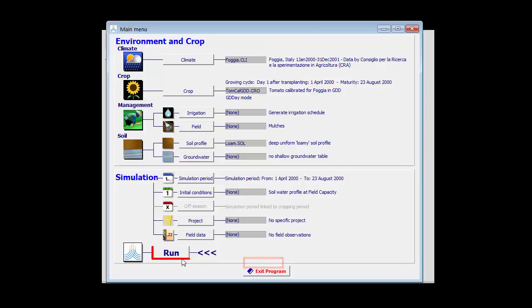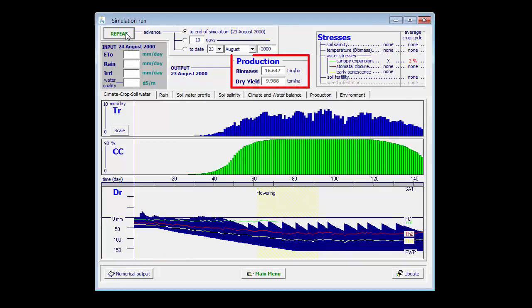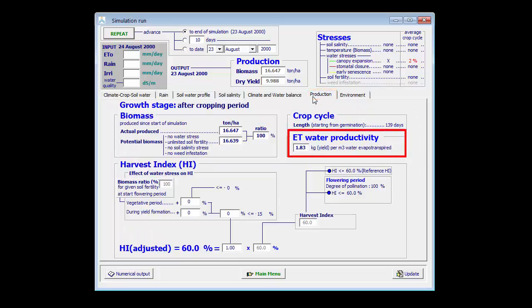I return to the main menu, run my example again. The yield remains always high, close to 10 tons. The amount of water needed in irrigation reduces to 420, the evaporation to 21.3, and the water productivity increases to 1.83.